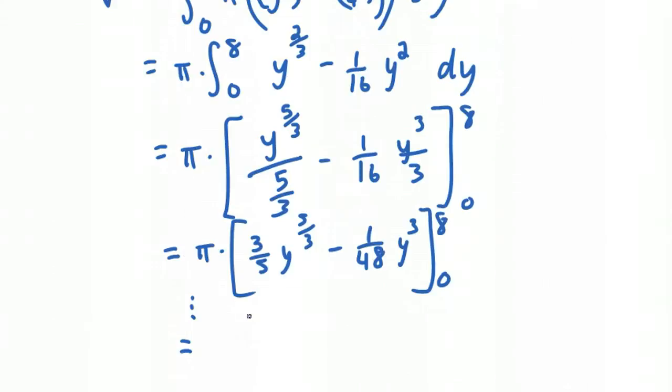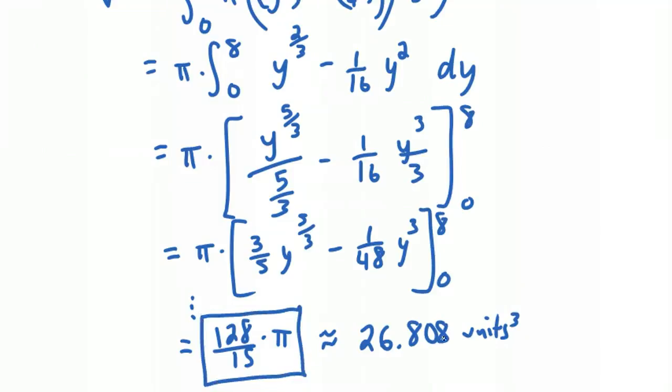At least I did. Anyway, you can check my work here. 128 over 15 times pi, which is approximately equal to 26.808. And that would be units cubed. So there's the exact answer right here, and here is the decimal approximation to three decimal places.